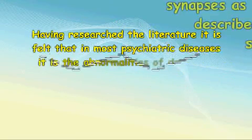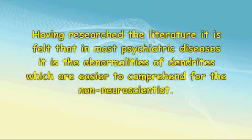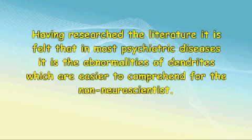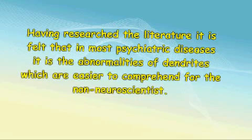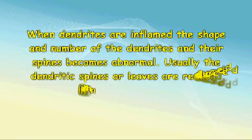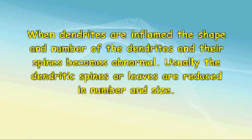Having researched the literature, it is felt that in most psychiatric diseases it is the abnormalities of dendrites which are easier to comprehend. Most psychiatric diseases now appear to be related to an abnormal immune response in predisposed people, resulting in inflammation of the brain. When dendrites are inflamed, the shape and number of the dendrites and their spines becomes abnormal. Usually the dendritic spines, or leaves, are reduced in number and size. Sometimes the disfigurement results in more spines which are larger.